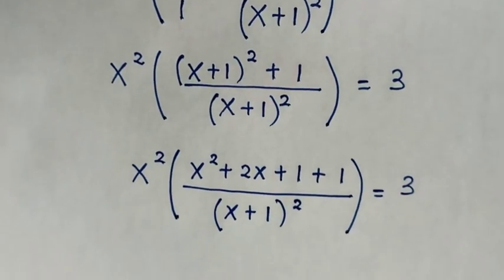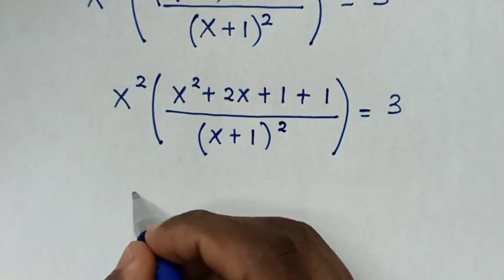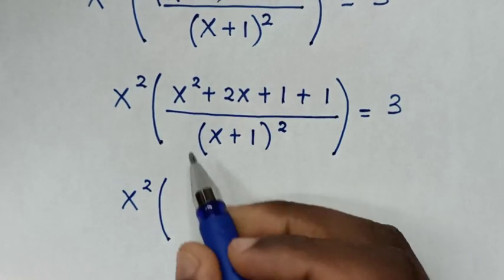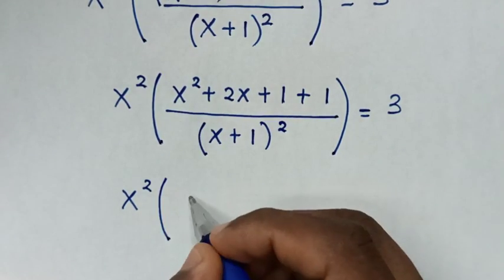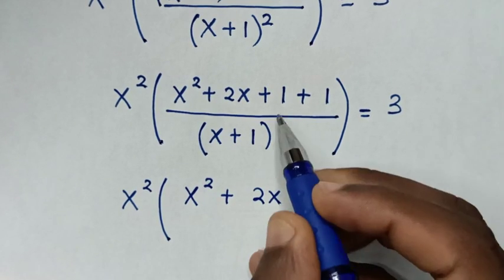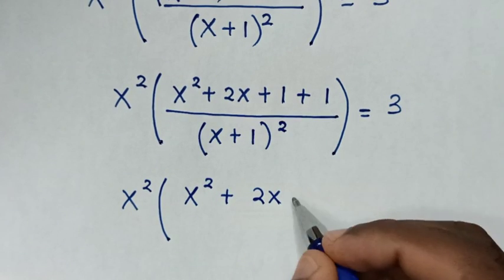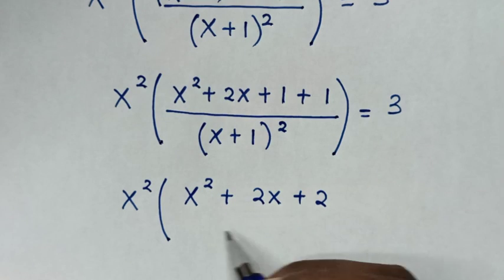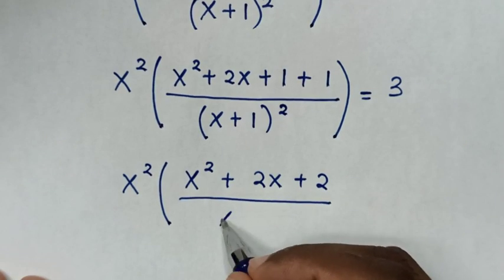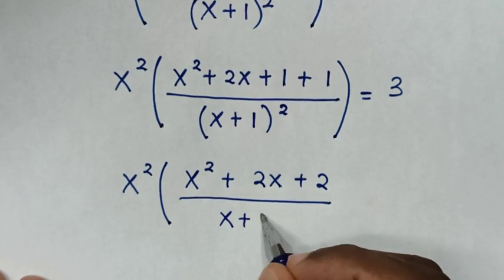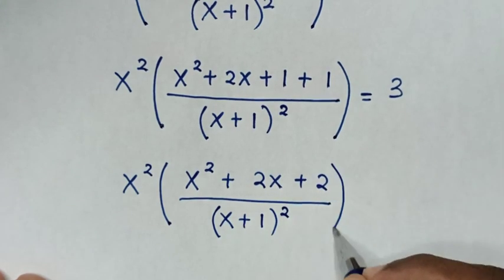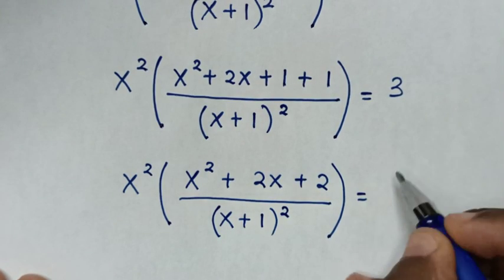Then our equation will be x squared, then bracket: x squared plus 2x, then 1 plus 1 is 2, so plus 2, over (x plus 1) squared, then bracket is equal to 3.